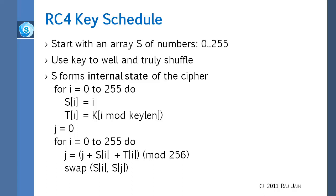To summarize the RC4 algorithm: initialize S[I] = I for I = 0 to 255, and T is the key repeated. Start with J=0, then for I = 0 to 255 compute J = (J + S[I] + T[I]) mod 256 and swap S[I] and S[J] — this is the initial permutation. For encryption, start with I = J = 0, then for each byte: I = (I+1) mod 256, J = (J + S[I]) mod 256, swap S[I] and S[J], compute t = (S[I] + S[J]) mod 256, and exclusive-OR S[t] with the plaintext byte M to get ciphertext.